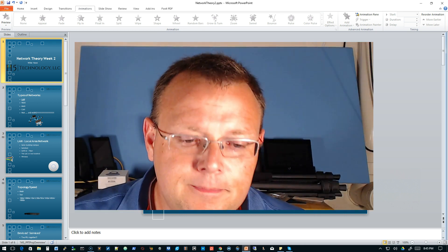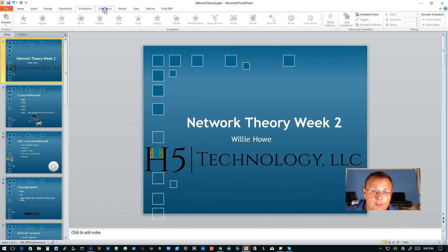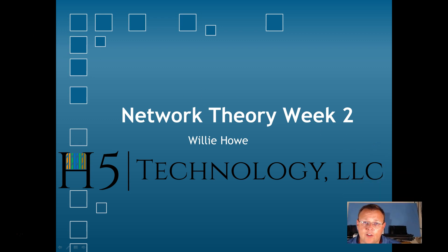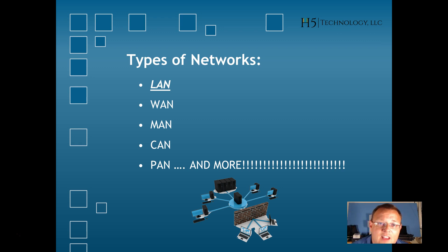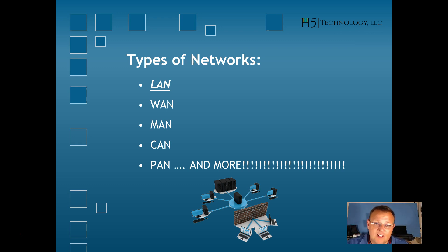Welcome to week two of Network Theory. Last week we covered what a network was. This week we are going to talk about types of networks. The types of networks that exist include: LAN — local area network, MAN — metropolitan area network, WAN — wide area network, WLAN — wireless local area network, CAN — controller area network, PAN — personal area network. The list goes on and on — SAN, storage area network, isn't even on here. These are all things that we're going to be talking about.